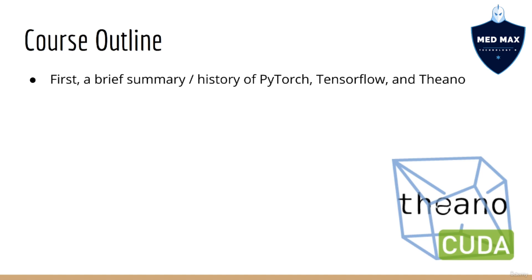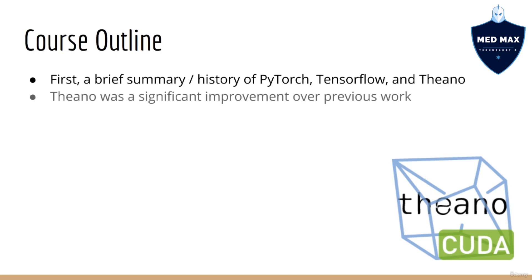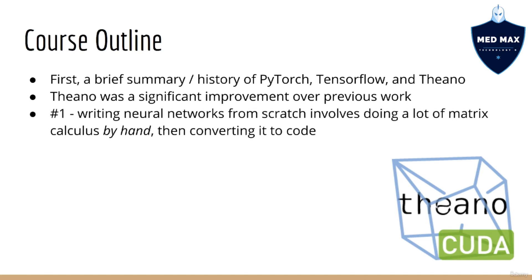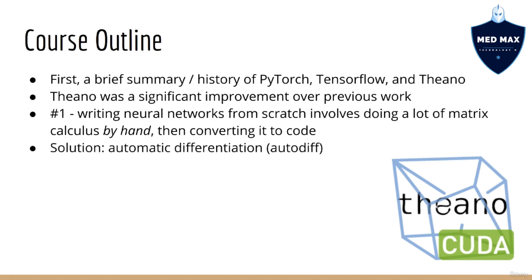In case you've had previous experience with TensorFlow or other deep learning libraries such as Theano — in the beginning there was Theano. Theano was a significant improvement over what was being done previously for two major reasons. Number one: writing neural networks from scratch involves doing a lot of matrix calculus by hand and then copying those equations into code. The Theano library was the first to innovate in this area using automatic differentiation, or autodiff for short.